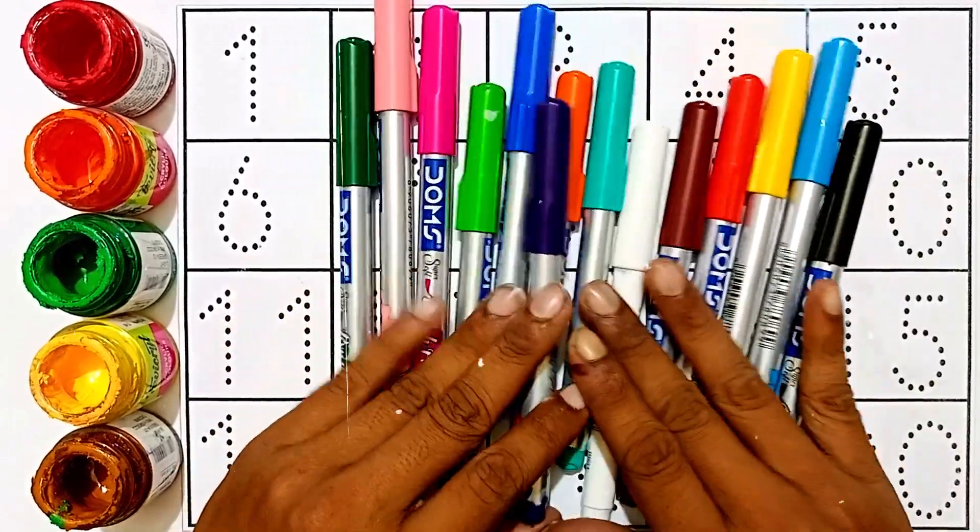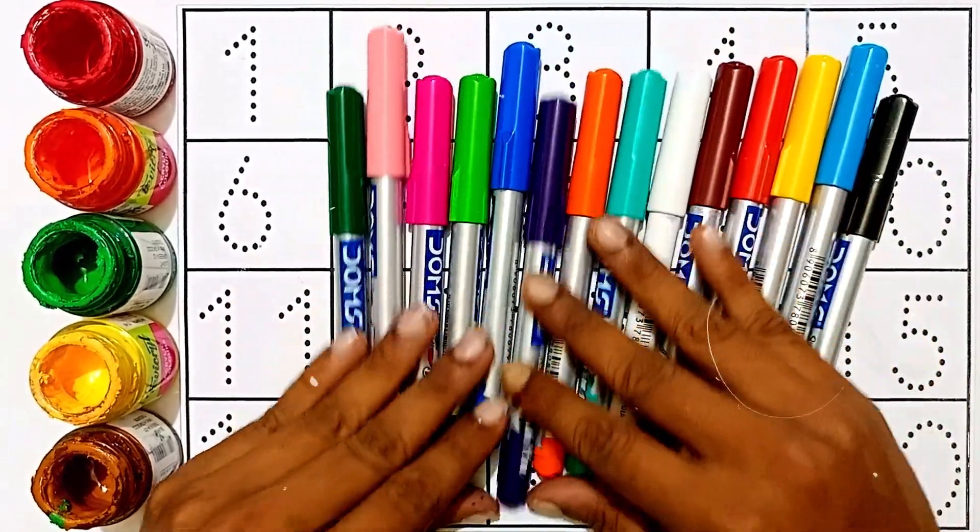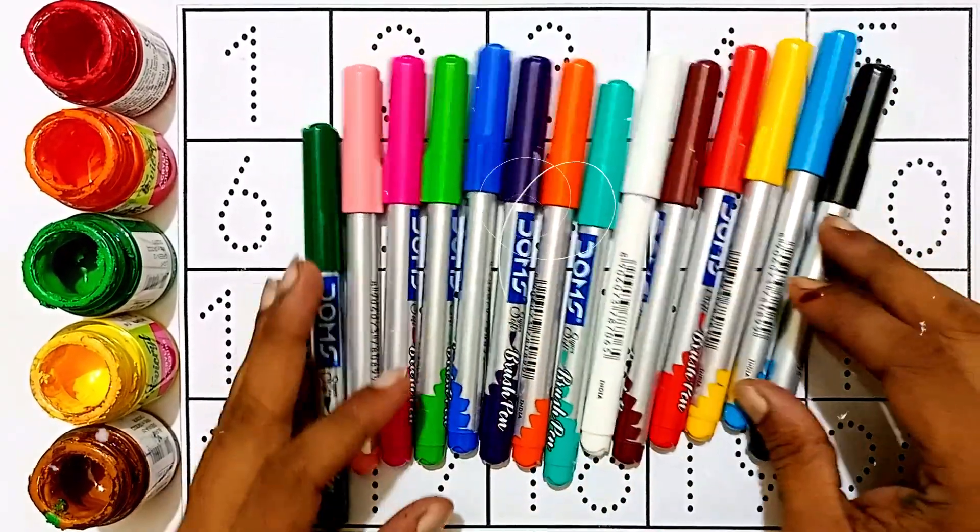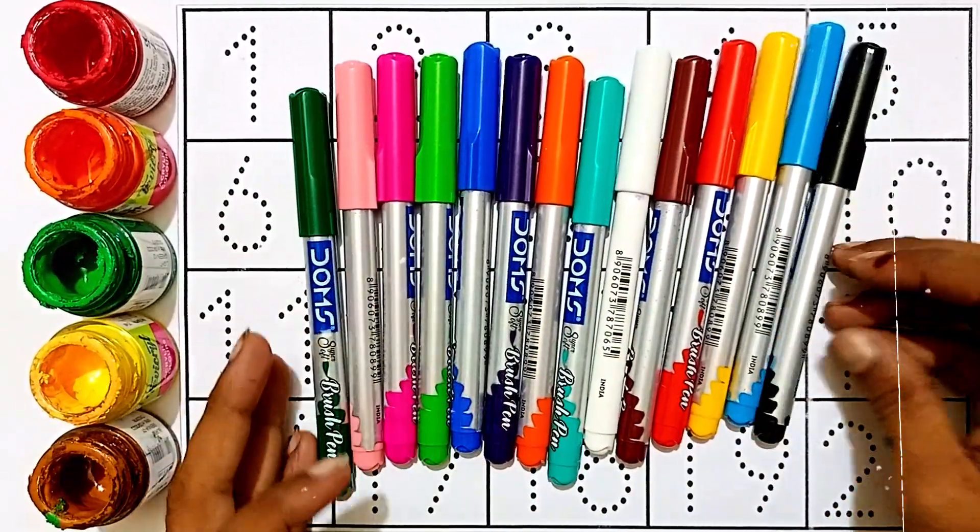Hello kids, let's learn some colors and coloring one, two, three counting. I'm going to do 1 to 20 counting.